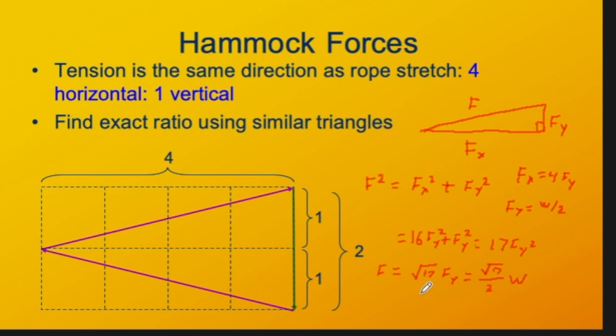The square root of 17 is a little bit more than four. Divide that by two, you get something that's bigger than two. Running it through a calculator real quick, I see that the square root of 17 is 4.123. And I divide that by two. So indeed, the tension in each of the two cables is more than twice the weight of the person sitting in the hammock.